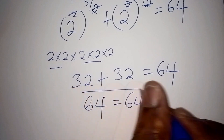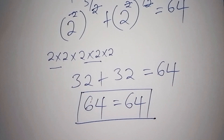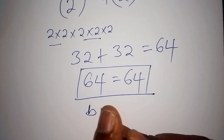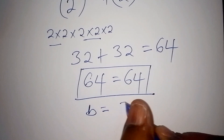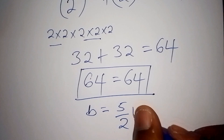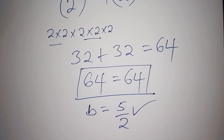This confirms that the value of b is 5 over 2. This is how that math problem is worked out. If you find this video interesting, please don't forget to give us a like, and most importantly, subscribe to our channel.